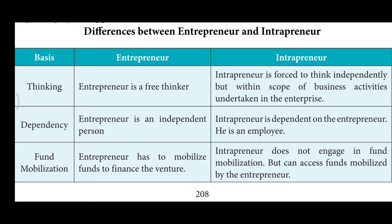An entrepreneur is a free thinker — it's his own idea and he has full liberty to think about the company and how to take it towards a goal. An intrapreneur works under the entrepreneur and is given a work to complete, so he is forced to think independently but can only act within the scope of the business and the company's norms. An entrepreneur, being a free thinker, need not consult anyone and faces the consequences of any risk he takes.